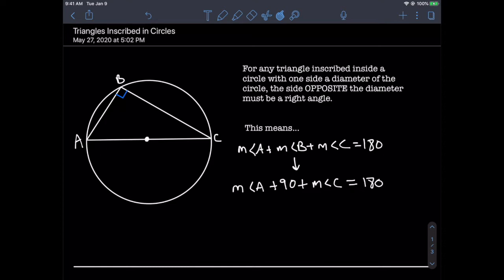Any triangle inscribed inside a circle with one side as a diameter of the circle—as we see in our diagram here to the left—the angle opposite the diameter must be a right angle. That means in our case, angle B is 90 degrees because that angle is opposite to the diameter AC. Now remember, we're dealing with triangles, so when you add up all the angles you get 180 degrees. In our sample, m∠A + m∠B + m∠C = 180. Since angle B is a right angle, we can replace that with 90 degrees, giving us m∠A + 90 + m∠C = 180.